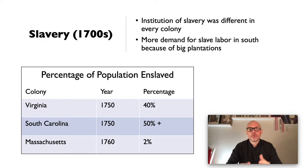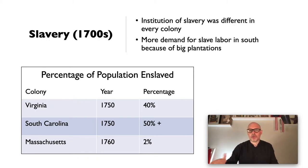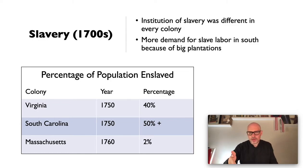In the south, slavery was very prominent. Virginia had 40% of its population enslaved; South Carolina more than 50%; Massachusetts only 2%. This shows what would eventually lead up to the American Civil War — there was no demand in the north, and a huge demand in the south. People knew slavery was bad and needed to be abolished, but the south became so dependent on it that it would eventually lead to the Civil War in the 1860s.